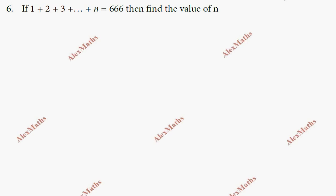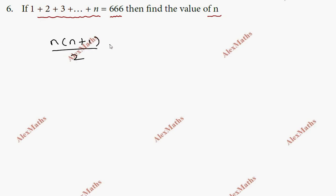Question number six: 1 + 2 + 3 + ... + n = 666. Using the formula for sum of first n natural numbers: n(n+1)/2 = 666. So n(n+1) = 2 × 666 = 1332.